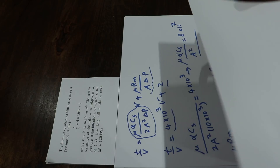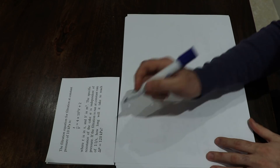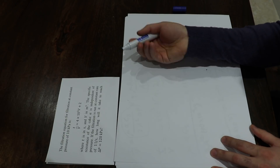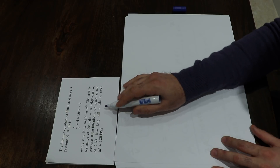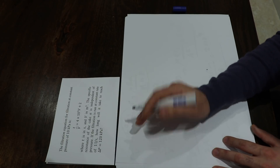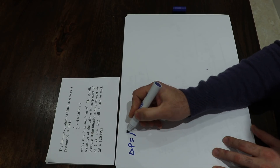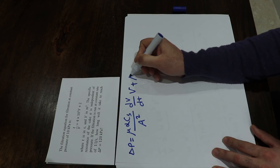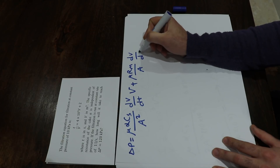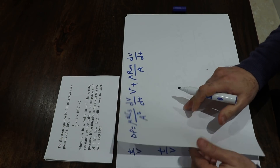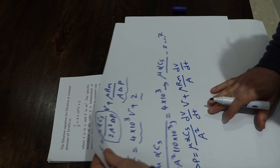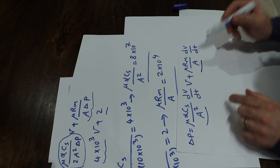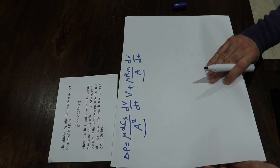The question asks: if filtration is run at a constant rate of 1 liter per second, how long will it take to reach delta P equal to 120 kilopascal? For constant rate filtration, the equation is: delta P equals mu alpha cs divided by a² times dV/dt times V, plus mu rm divided by a times dV/dt. The values of mu alpha cs over a² and mu rm over a calculated previously can now be substituted directly.